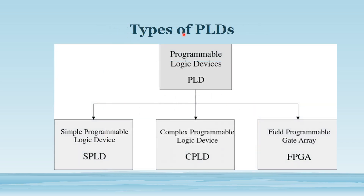A programmable logic device is broadly classified into three categories based upon the number of gates, complexity, operating time, propagation delay, and other features. The first category is Simple Programmable Logic Device, in short SPLD. The second is Complex Programmable Logic Device, that is CPLD. The third is Field Programmable Gate Array, in short FPGA. Today's lecture covers SPLD; future lectures will cover CPLD and FPGA.